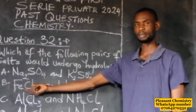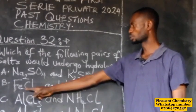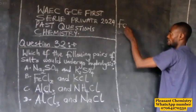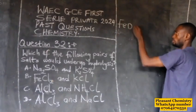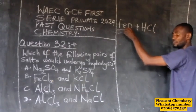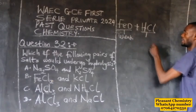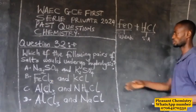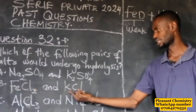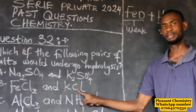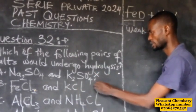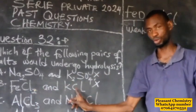The second pair is iron(II) chloride (FeCl₂) and potassium chloride (KCl). Iron(II) chloride will undergo hydrolysis because it is formed from FeO, which is a weak base, and HCl, which is a strong acid. However, KCl will not undergo hydrolysis because it is formed from a strong alkali (KOH) and a strong acid (HCl). So this pair is not fully correct — only one of the salts undergoes hydrolysis.